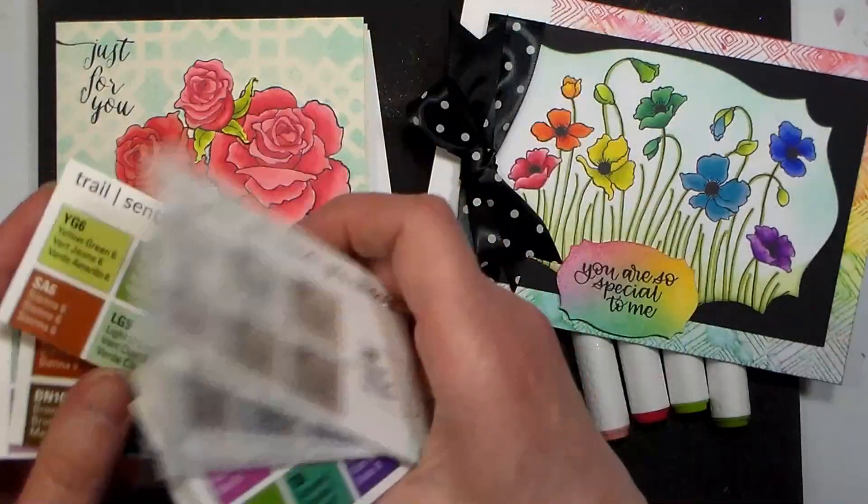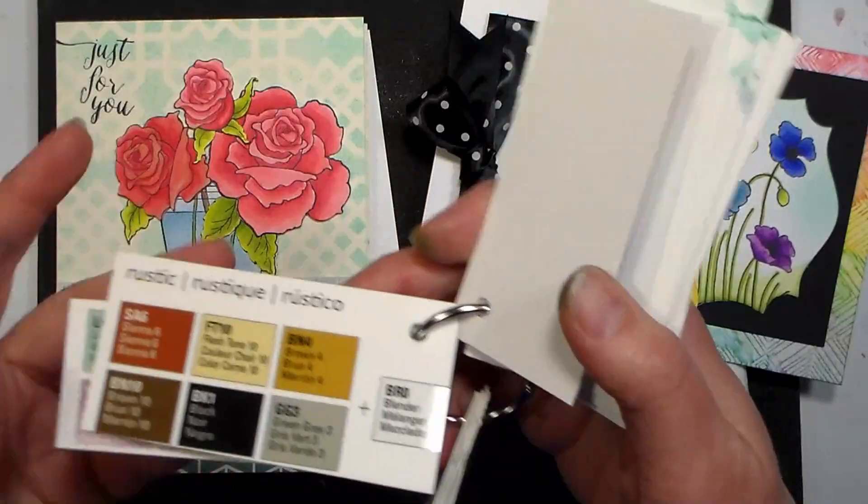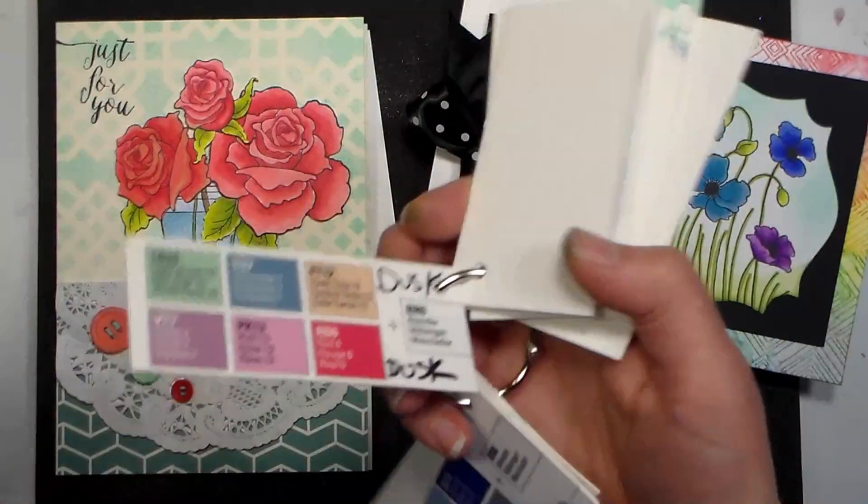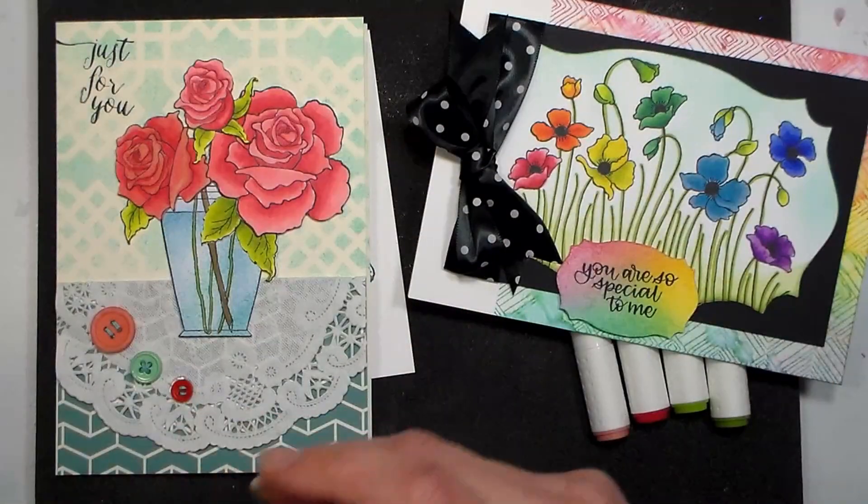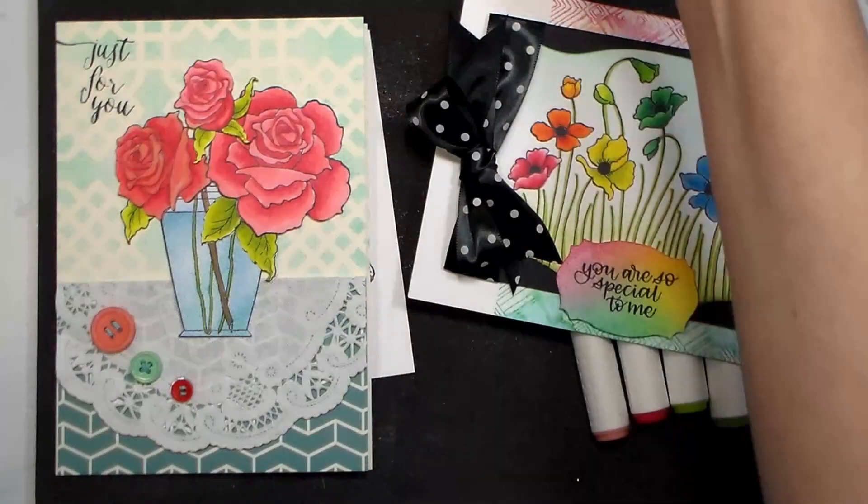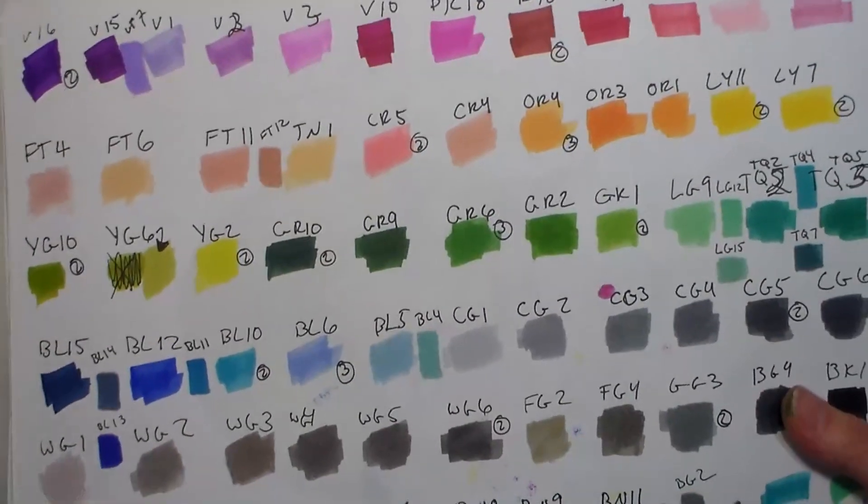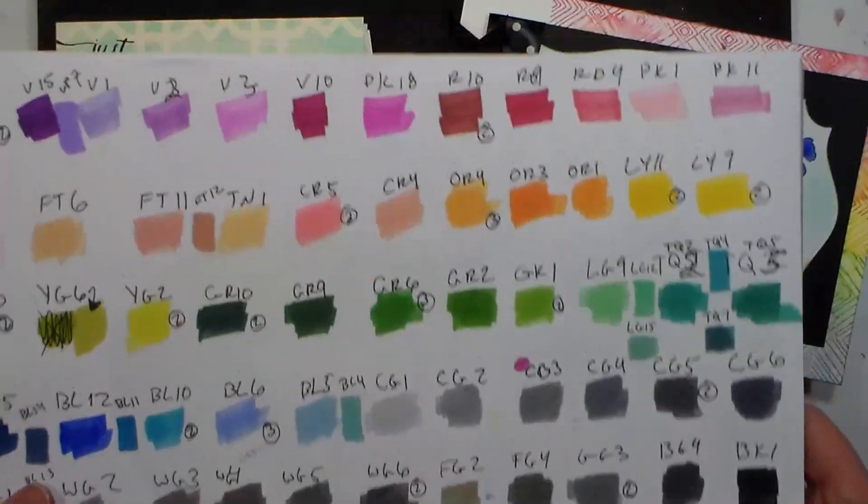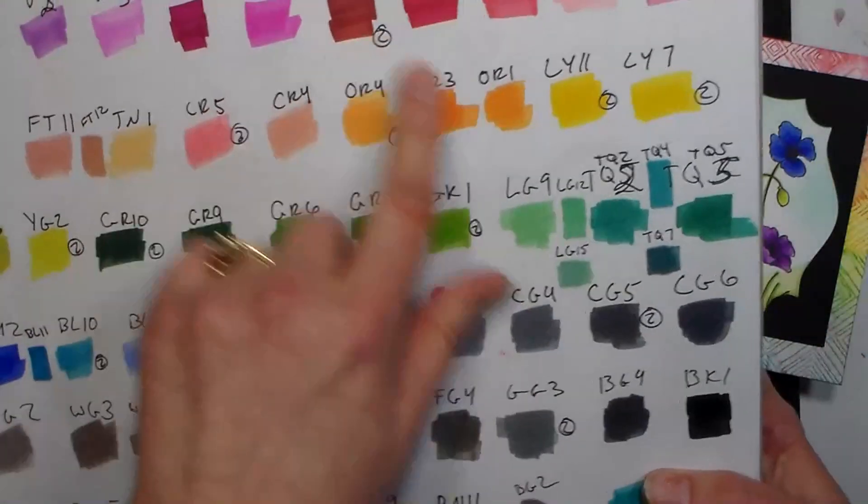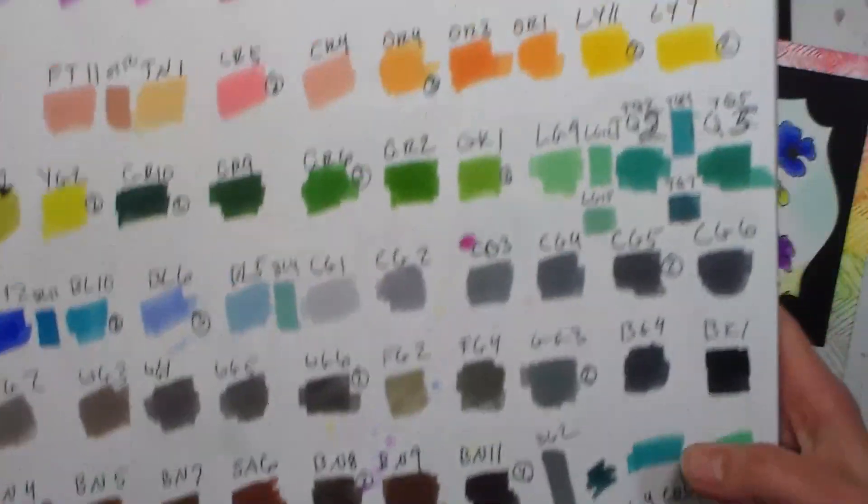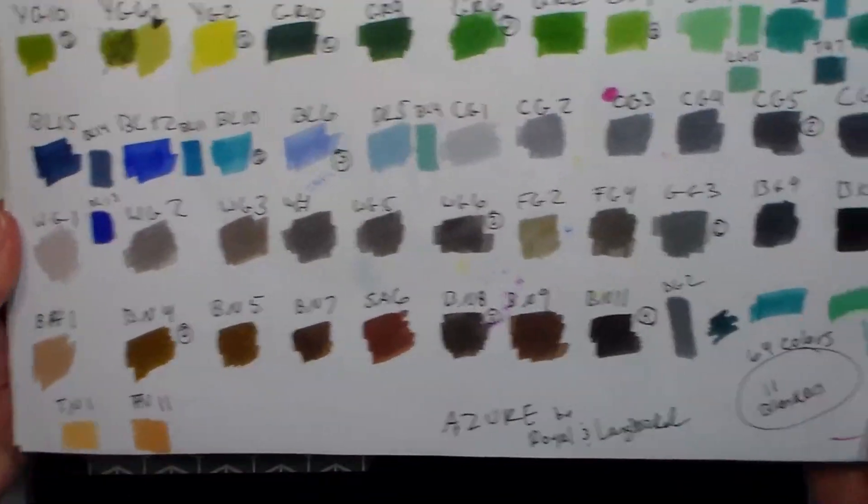So there's some really beautiful colors here. There are some duplicates between sets, so one set might have FT10 and another set might as well, so just to let you know if you are picking these up in store to look at the colors that are included so you don't end up getting sets with doubles if that's not your intention. And just to give you a look at what the colors really look like, because I don't trust the colors on the caps with alcohol markers. I always want to swatch them on marker paper to get a good idea, so this is what the full range will look like.